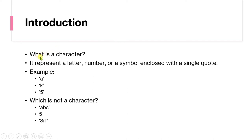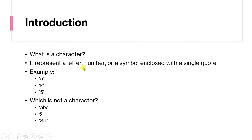First of all, let us understand what is meant by a character. In C programming, a character represents a letter, a number, or a symbol enclosed with a single quote. For example, 'a' enclosed with a single quote is a character. Similarly, 'k' with single quote enclosure is called a character. Similarly, a number placed inside single quotes also represents a character. So any symbol, letter, or number enclosed with a single quote is treated as a character.